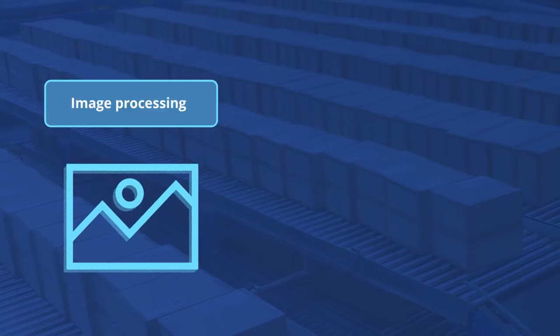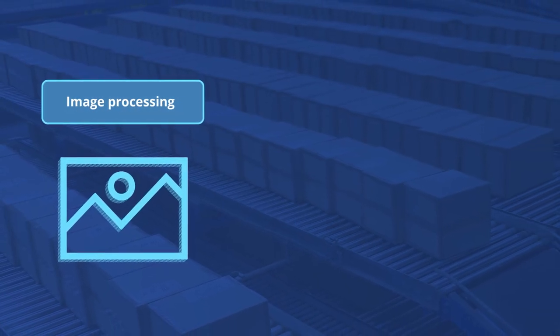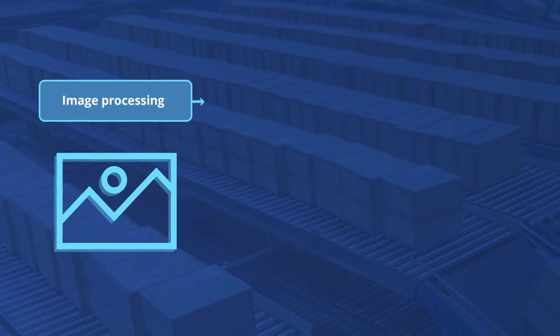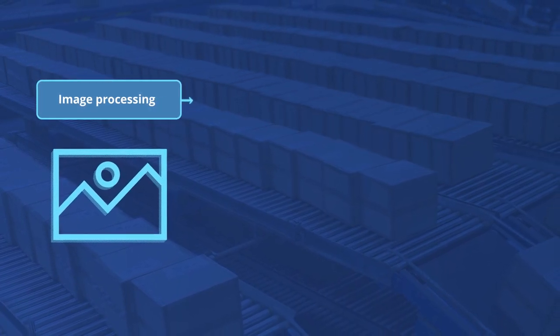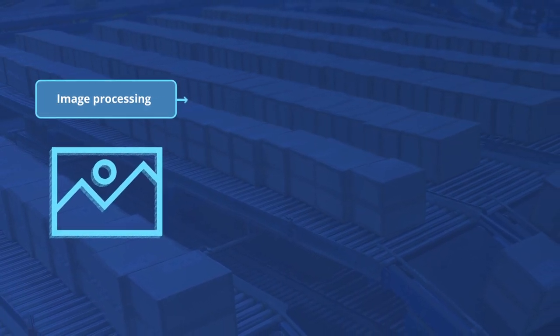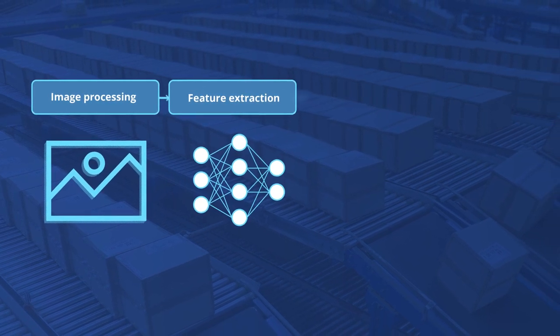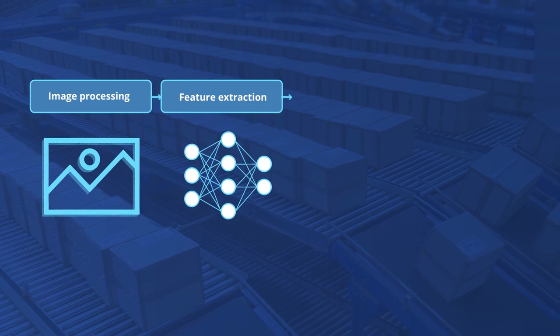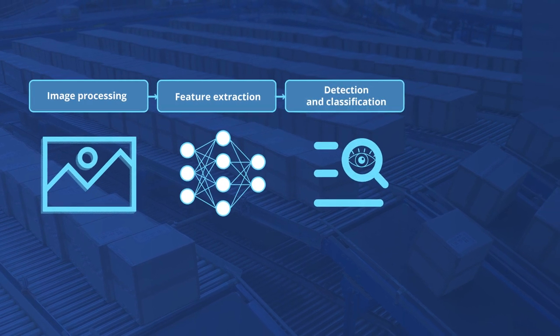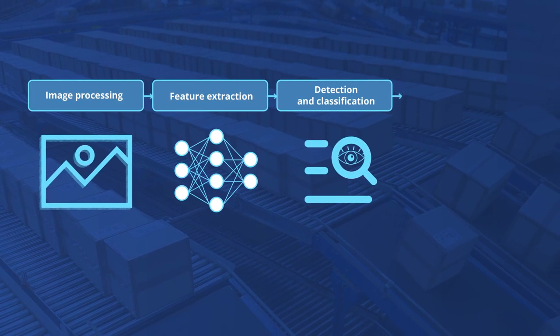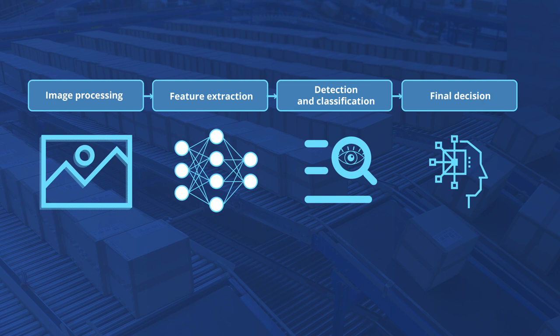Let's see how it works. Recent progress in computer vision makes it possible to use advanced deep learning technologies for visual inspection. Images captured by a camera are processed by a neural network which is trained to detect and localize the defect. Once the visual inspection system is confident about where the problem is, it takes predefined actions like sending a notification or executing other operations.